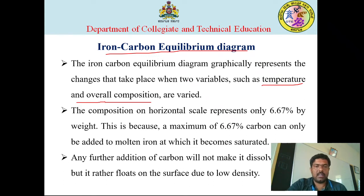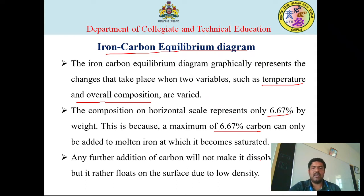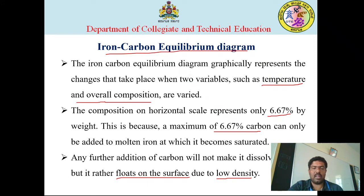The composition on the horizontal scale goes only up to 6.67% carbon, as a maximum of 6.67% carbon can only be added to molten iron. If you add more carbon above this point, it will not mix — instead, due to its low density, it will float on the surface. So in the horizontal axis, you can only put 0 to 6.67% carbon and you cannot put more than that.